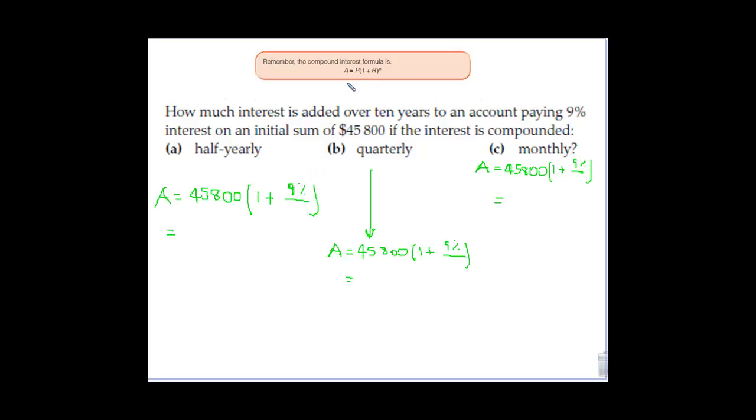So remembering our compound interest formula, that didn't seem like it was a problem. People were starting to remember that formula, but it was in the actual application. This time we've got $45,800 and an account that pays 9% per annum interest. What we want to do is find what amount this is growing to over 10 years if the interest is compounded differently.